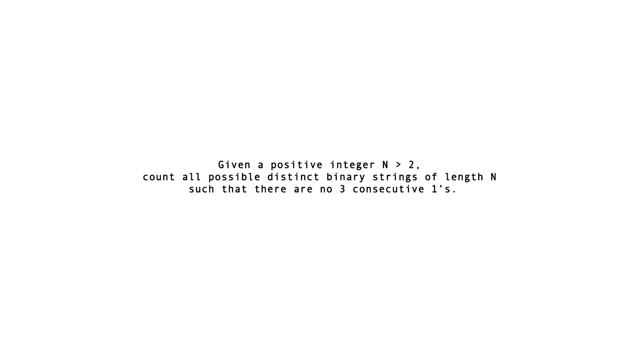Hello everybody, today I'm going to explain the solution of the following problem. Given a positive integer n greater than 2, count all possible distinct binary strings of length n such that there are no 3 consecutive ones.